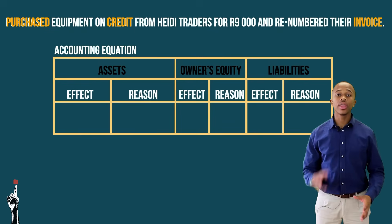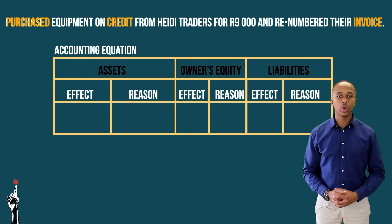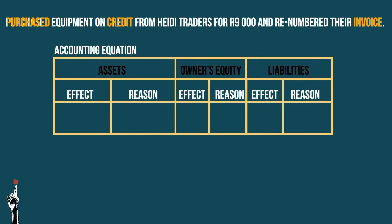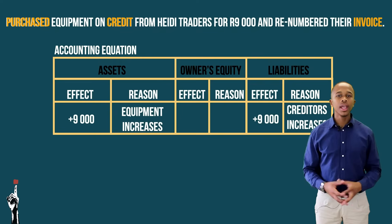Answer in three, two, one. The equipment will increase by R9,000 as the business bought equipment. The liabilities will also increase as the business bought the equipment on credit.